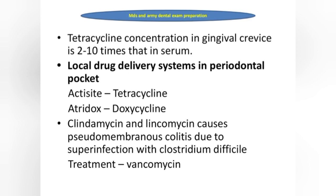Tetracycline concentration in the gingival crevice is two to ten times that in serum. So in cases of gingivitis or periodontitis, tetracycline may be a good antibiotic choice. For local drug delivery systems in the periodontal pocket: Actisite contains tetracycline, and Atridox contains doxycycline.